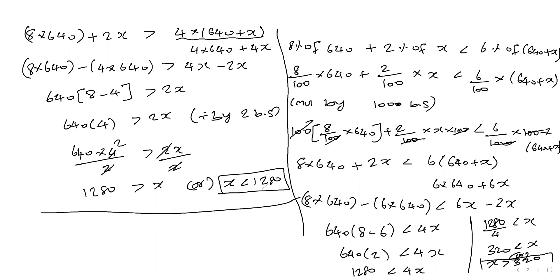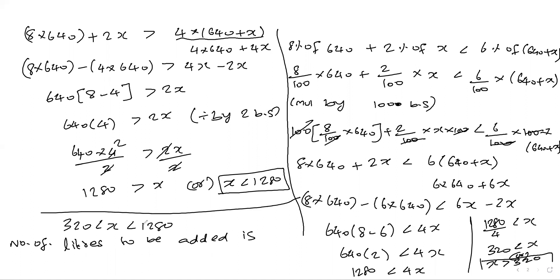Combining both solutions: x is less than 1280 and x is greater than 320. So 320 is less than x, which is less than 1280. Therefore, the number of liters of 2% boric acid solution to be added is greater than 320 liters but less than 1280 liters.